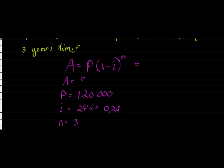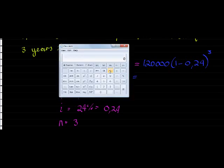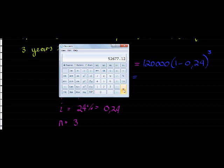We can substitute this immediately into our formula. We get 120,000 times (1 - 0.24) to the power of 3. And that, using our calculator, we can solve: 120,000 multiplied by in brackets 1 minus 0.24 close the brackets to the exponent of 3. And we get 52,677.12 cents.